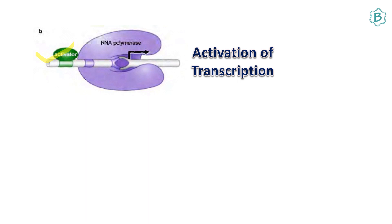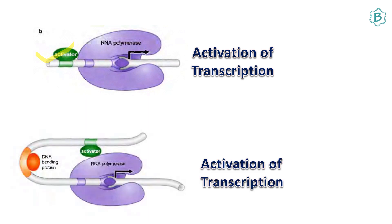Activation of transcription can occur when an activator molecule sits next to the RNA polymerase. But what if the activator molecule sits many kilobases away from the RNA polymerase? In that case, a DNA bending protein binds to DNA and bends it so that the activator molecule is now in close proximity to the RNA polymerase and can activate transcription.